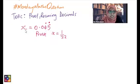The question on Monday was x equals 0.045, with 45 being the recurring numbers, and we needed to prove that x equals 1 over 22. This is how we would do it.